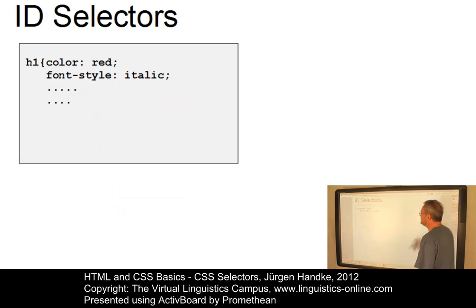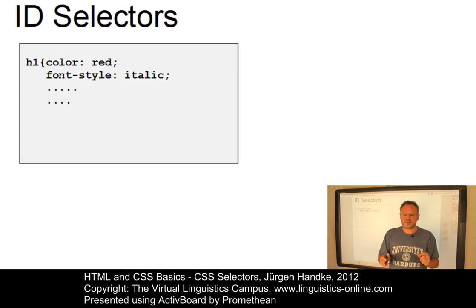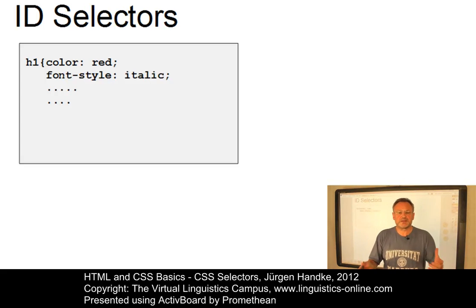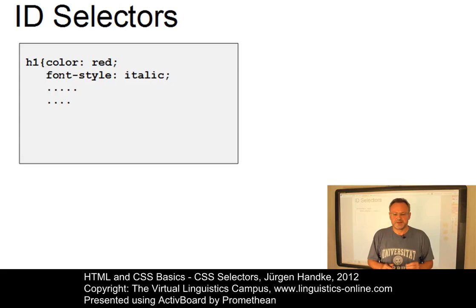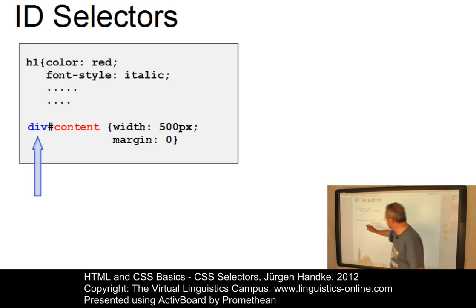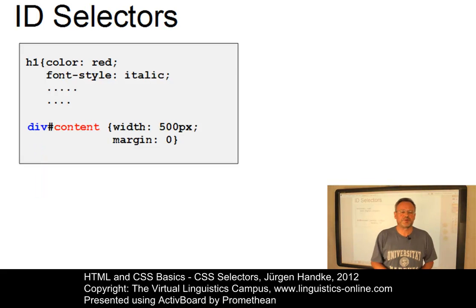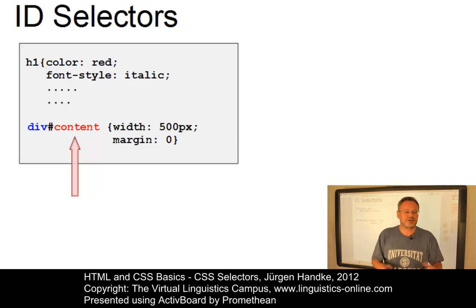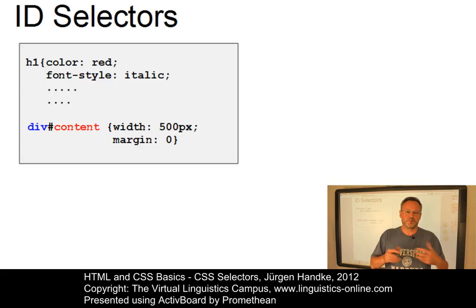The ID selector is used similarly to the class selector, with the only difference that the respective element can be used only once within the HTML document. This means IDs can be used to mark elements semantically — the ID value should be a self-explanatory label for the element. In the stylesheet, ID selectors are introduced by the type selector, followed by a hashtag and then the ID selector value, then the property value list. In this case, the div tag would be defined with a width of 500 pixels.